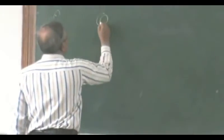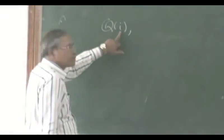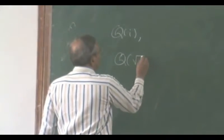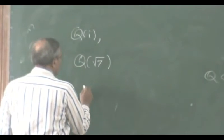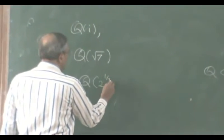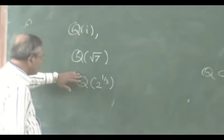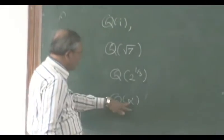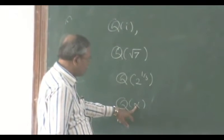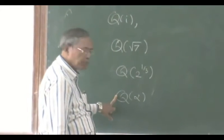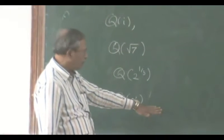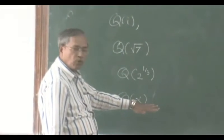Examples of such number fields are Q(i), where i is the square root of minus 1. I can take Q(√7), I can take Q(2^(1/3)). Here Q(alpha) means all rational expressions in alpha with coefficients from Q — a polynomial in alpha upon a polynomial in alpha — where the denominator is required to be a nonzero quantity.